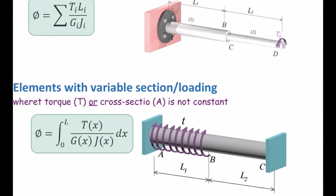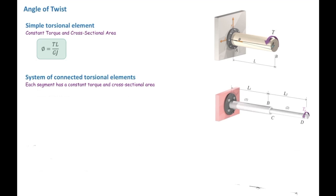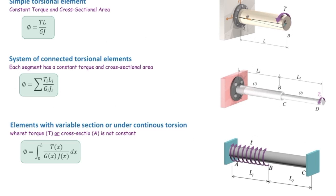So for a simple case where one shaft is subjected to torque, this is the equation that we use. If we have a system of shafts, we use this equation. And in the section with variable loading, we need to use the integral form, as shown here.